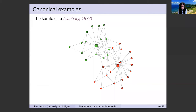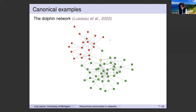Here is another canonical example—the dolphin network—where they were also incredibly lucky to observe the ground truth. This is from trackers that marine biologists attach to dolphins. One special dolphin marked in yellow left the herd, just swam away. The red and green groups stopped communicating completely after that—they just split. And mysteriously, almost two years later, the yellow dolphin came back and they started communicating again. This is another instance of ground truth: a well-connected, small, two-community network.